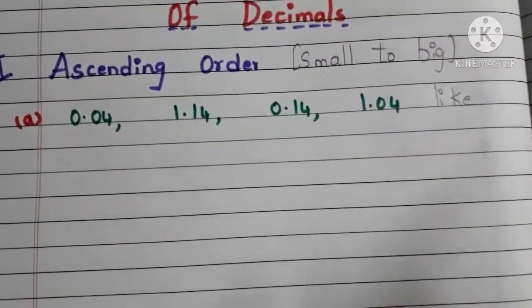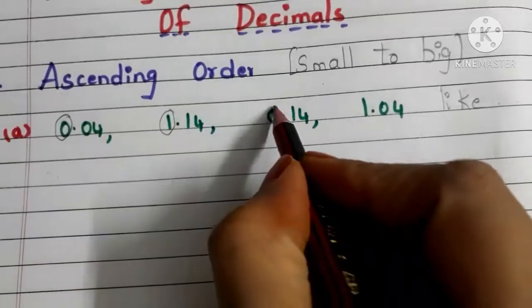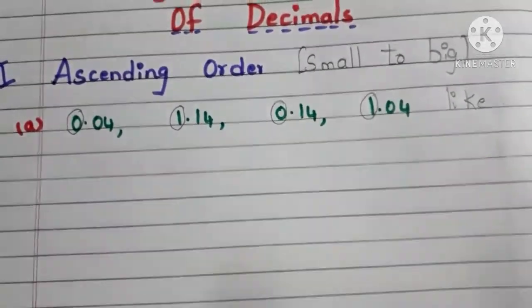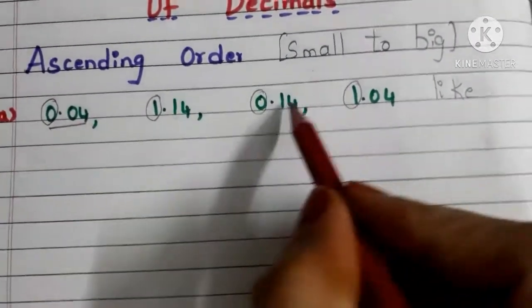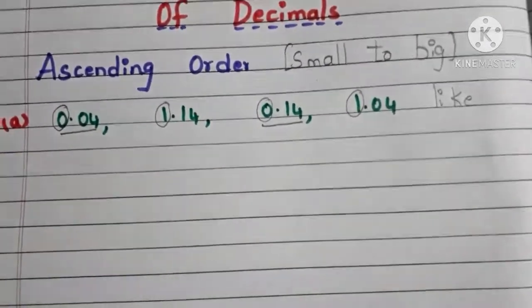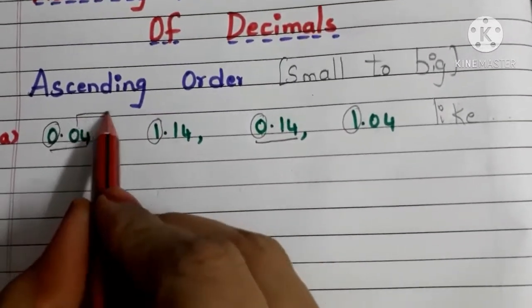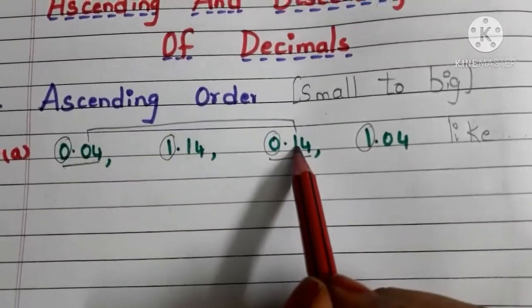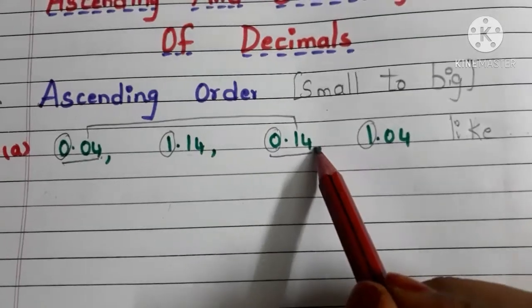First we have to compare the whole number parts. Here 0 is there, here 1 is there, here 0 is there, here 1 is there. 0 is smaller than 1, but here we have two numbers starting with 0. Which one is smaller? The whole number parts are equal, so compare the 10th digits. Here 0 is smaller than 1, so 0.04 is smaller than 0.14.